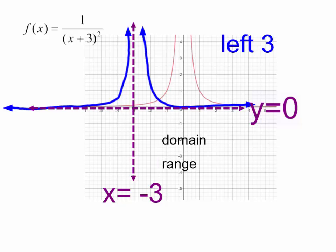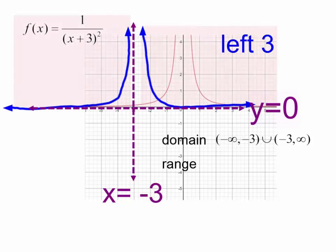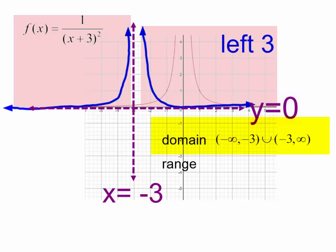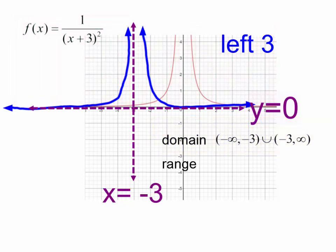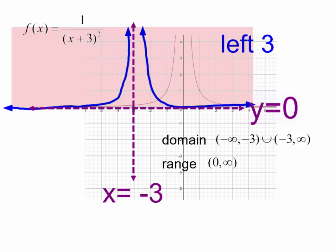What about my domain and range? The domain — all of my x's are included up to negative 3, then I have a vertical asymptote, and then my graph starts again after negative 3 and goes to infinity. What about my range? There are no negative y's. My graph starts right after y equals 0. I have a horizontal asymptote at y equals 0, but right after 0 my graph starts and the y's go up. My range is 0 to infinity.